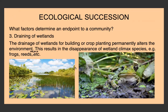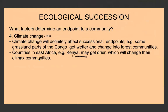Another factor is the draining of wetlands, which is human-controlled. Humans often drain wetlands to build urban areas or plant crops, permanently altering the environment. This can result in the disappearance of wetland climax species — things like frogs, reeds, birds, and fish. Climate change is also a very important factor — it will definitely affect successional endpoints. For example, some grassland parts of the Congo have become wetter as the climate has changed and turned into forest communities. Countries in East Africa like Kenya may have become a lot drier, changing their climax communities, and previously fertile areas may become more arid.